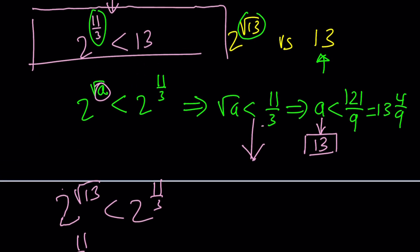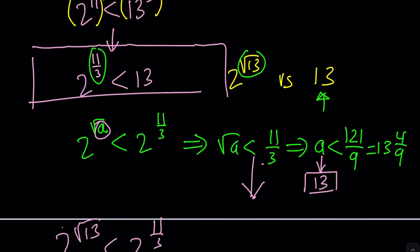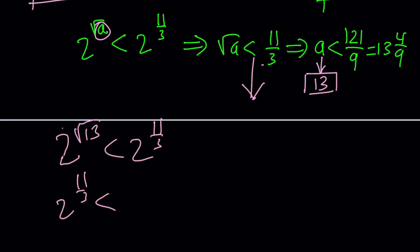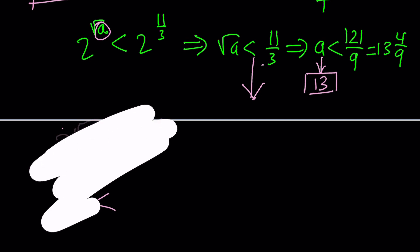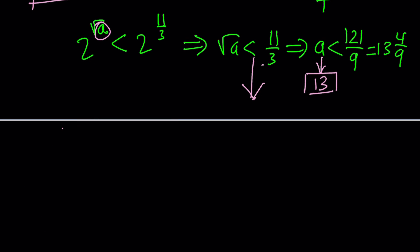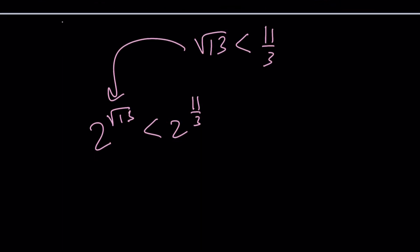2 to the power 11 thirds is less than 2 to the power. Wait a minute. Did we get that? Okay, let's see. We got 2 to the power. Okay, this is what I was trying to get, not the power of 2. Sorry then, this should give me 2 to the power root 13 is less than 2 to the power 11 thirds. Great.